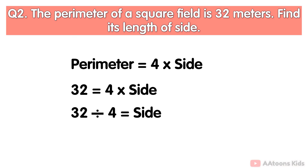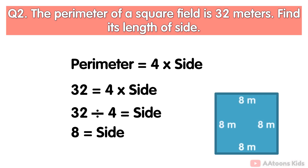After dividing 32 by 4, the result is 8. So the side of the square is 8 meters.